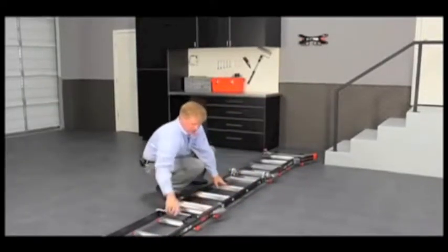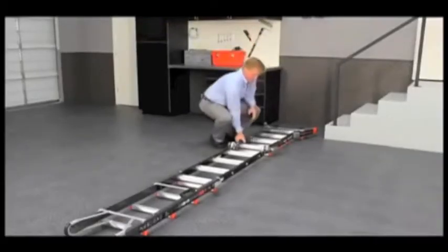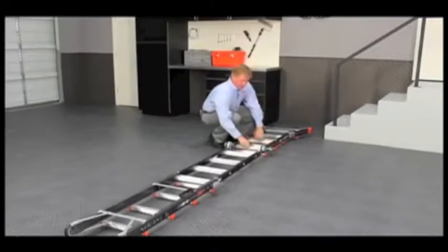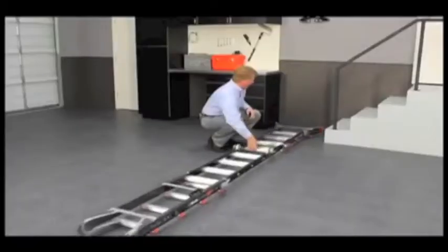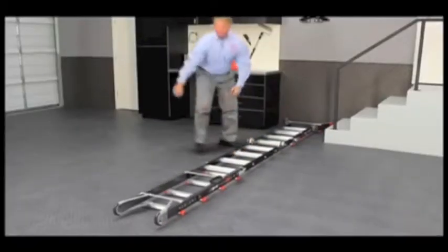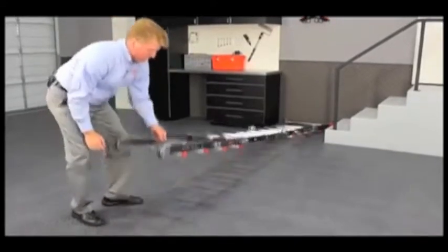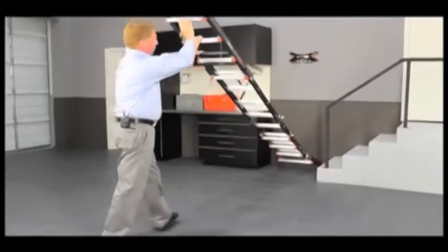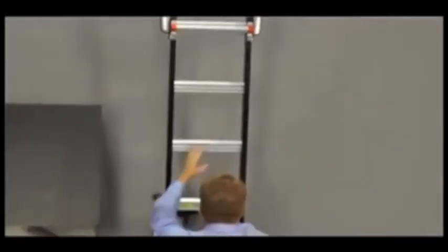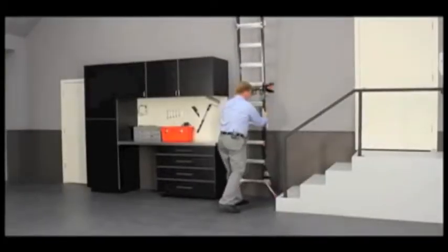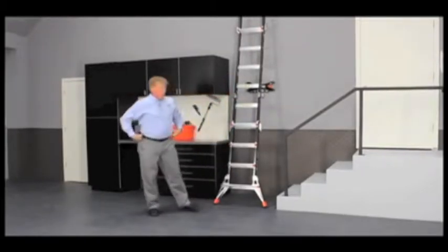Then, either with the help of another person holding the bottom of the ladder or up against the wall, make sure that the bottom of the ladder is supported. Lift the top and then hand over hand you want to walk the ladder up and pull the bottom out and lean it up against the wall.